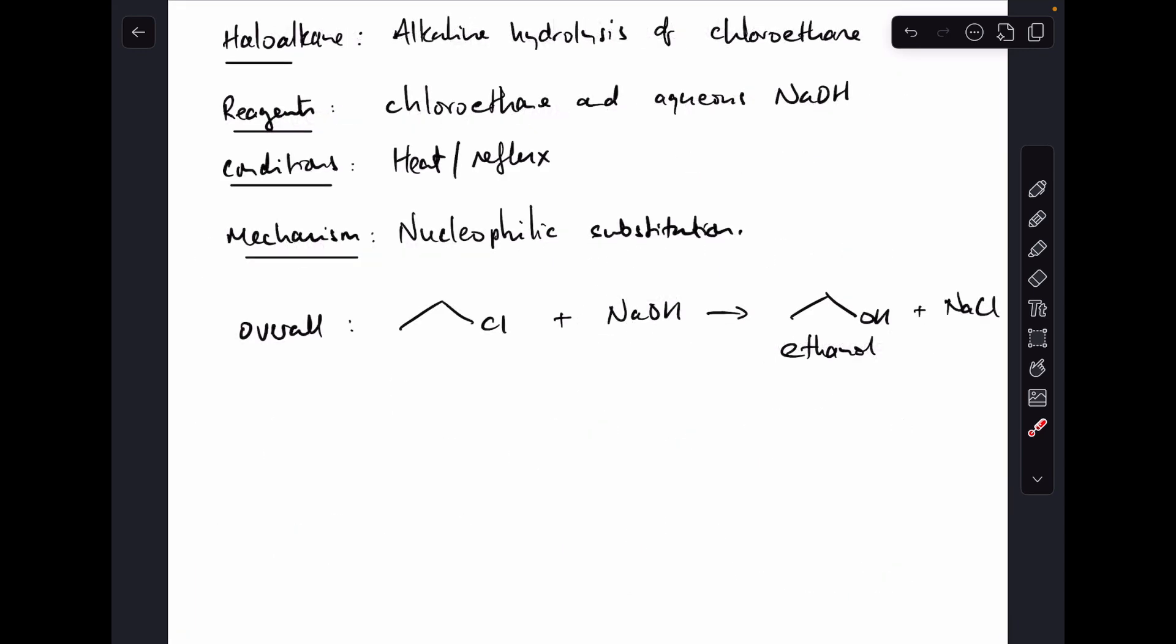Remember at the start of the video I said I was going to do the alkaline hydrolysis of chloroethane. So my reagents will be chloroethane and aqueous sodium hydroxide, or you could use any metal hydroxide there. That's the obvious one to go for. Conditions-wise, you just need a source of heat—heat or reflux you could say. And the mechanism this time is nucleophilic substitution. I'll explain why it's nucleophilic when I get into the mechanism. The overall reaction equation is here, and I'm just naming that organic product, which is obviously ethanol. Moving on to the mechanism—much simpler than the first one.